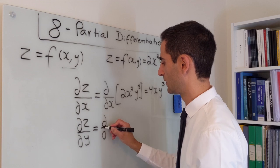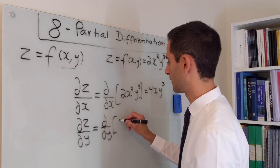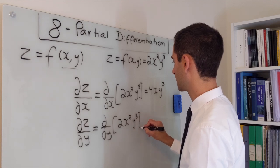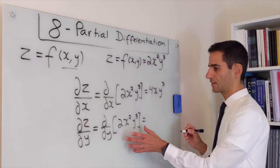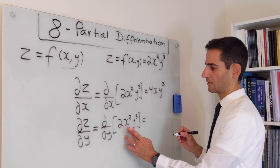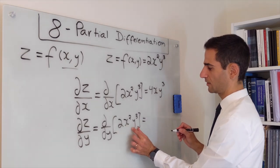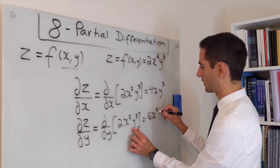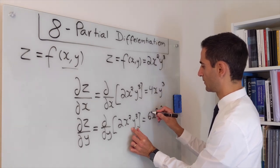This is the same as applying the ∂/∂y operator to the function 2x²y³. And in this case, once we apply it, x is a constant, 2 is a constant, we're only differentiating y, and this becomes 6x²y².